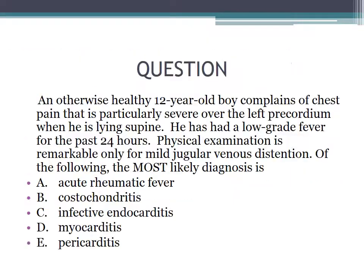Our next question: an otherwise healthy 12-year-old boy complains of chest pain that is particularly severe over the left precordium when lying supine. He has had a low-grade fever for the past 24 hours. Physical exam is remarkable only for mild JVD. Of the following, the most likely diagnosis is: acute rheumatic fever, costochondritis, infective endocarditis, myocarditis, or pericarditis.